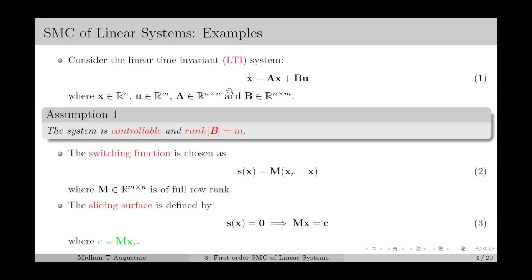Let's consider the linear time invariant, or LTI, system as given in equation number 1, in which x is the state vector which is an n-dimensional vector, u is the control input vector which is an m-dimensional vector, A is the system matrix which is an n by n matrix, and B is the input matrix which is an n by m matrix. We assume that the system is controllable and the rank of B is equal to m. This implies that we can control the system from any initial state to any desired state using the control input u, and the matrix B has full column rank — in other words, the columns of B are independent.